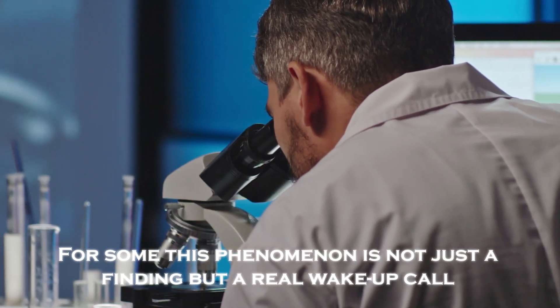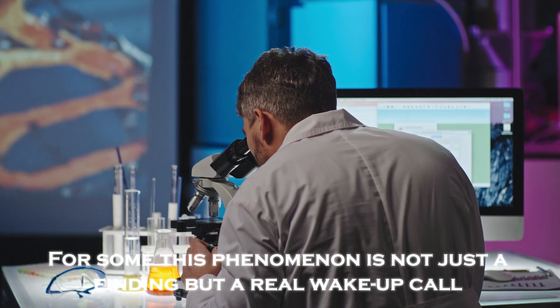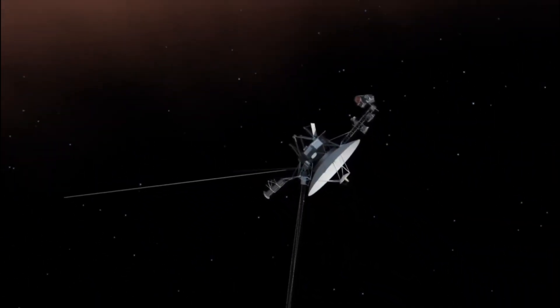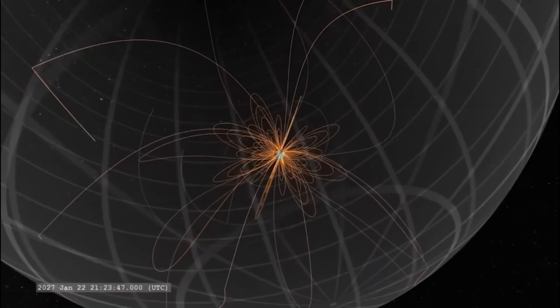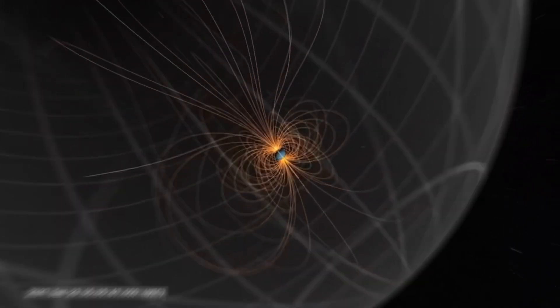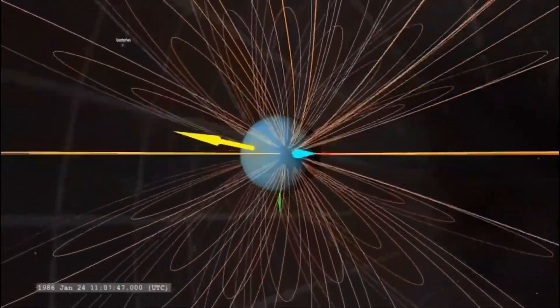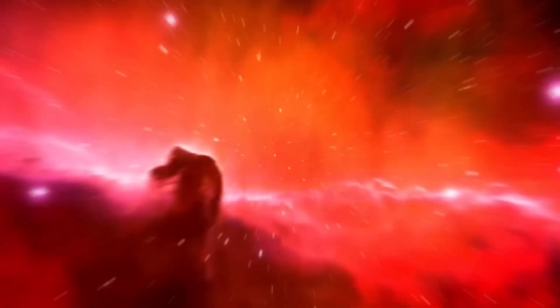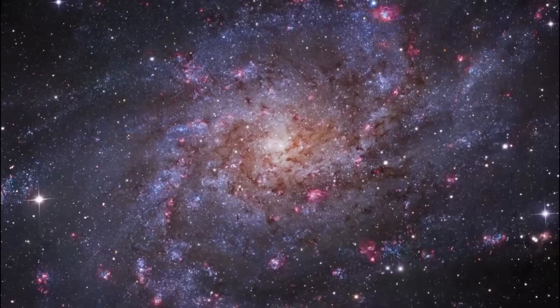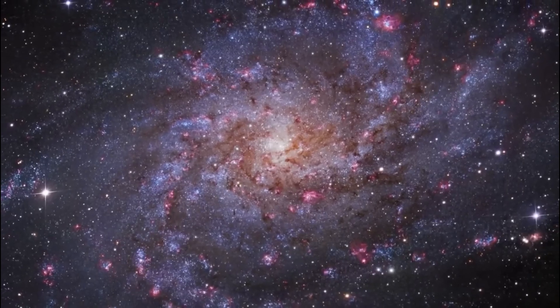For some scientists, this phenomenon is not just a finding, but a real wake-up call. Voyager 1 may be discovering an energy grid or something similar at the edge of our solar system. If these energy streams exist, we are seeing for the first time how the solar system connects to the galaxy on a scale we had not anticipated. This could radically change our understanding of energy in the universe.